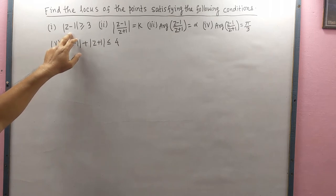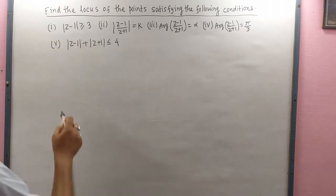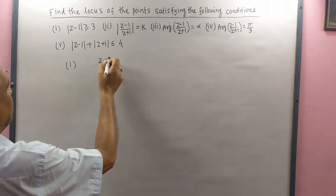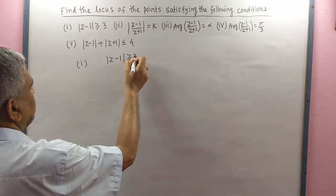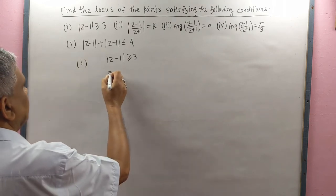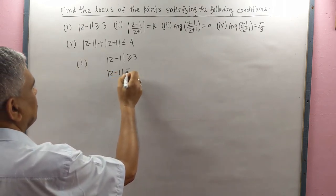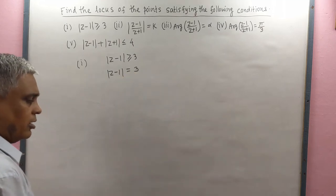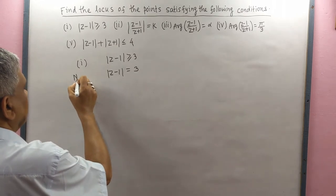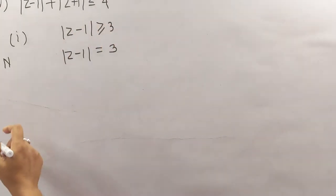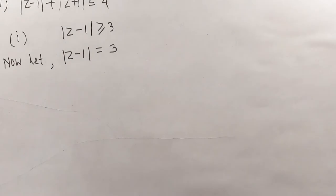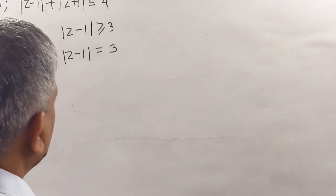Firstly we solve number 1. Given that |z − 1| ≥ 3. We first take |z − 1| = 3, then we will solve |z − 1| ≥ 3. Now let |z − 1| = 3.